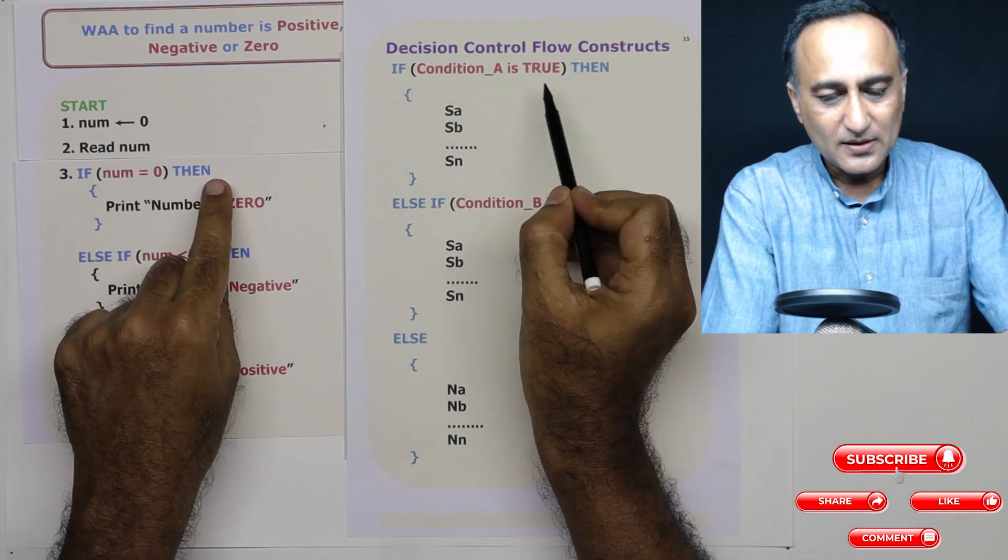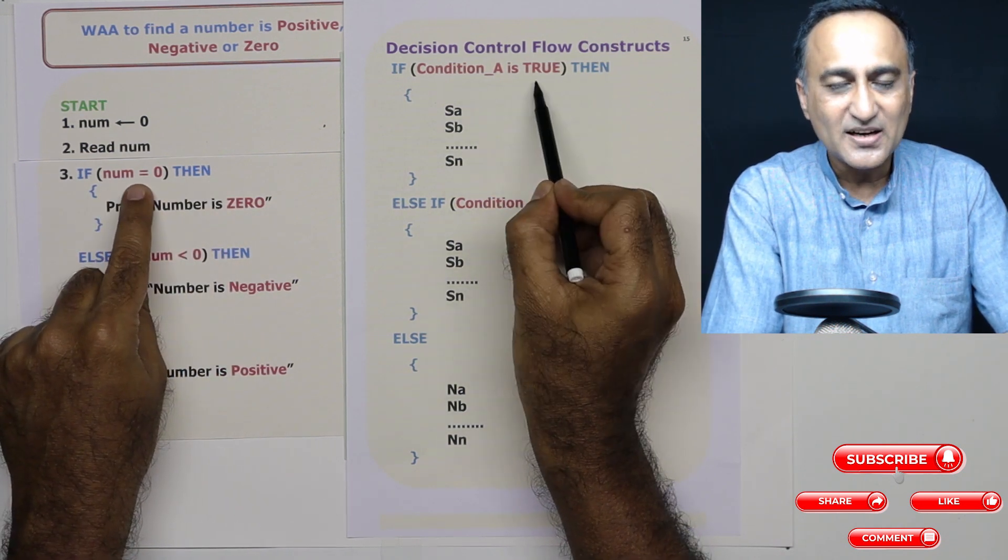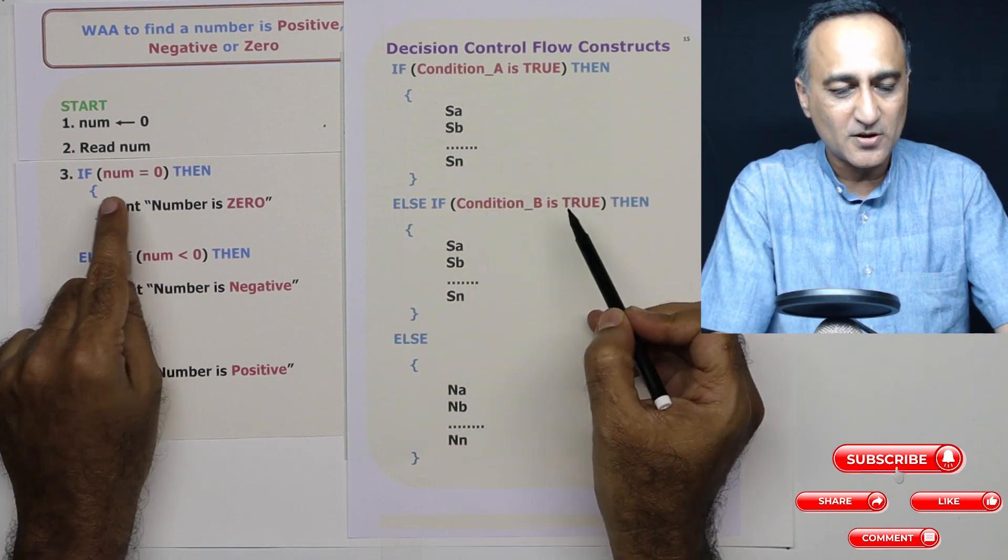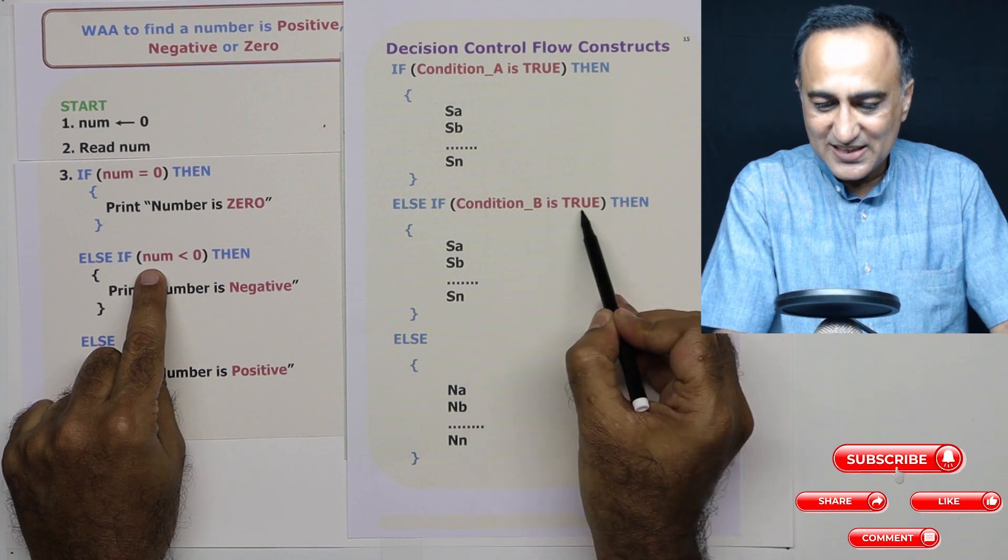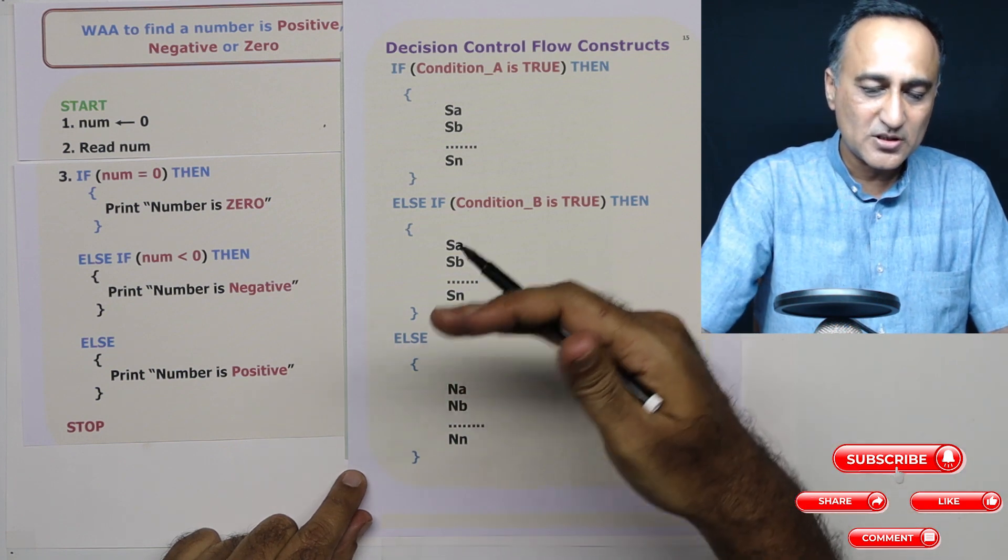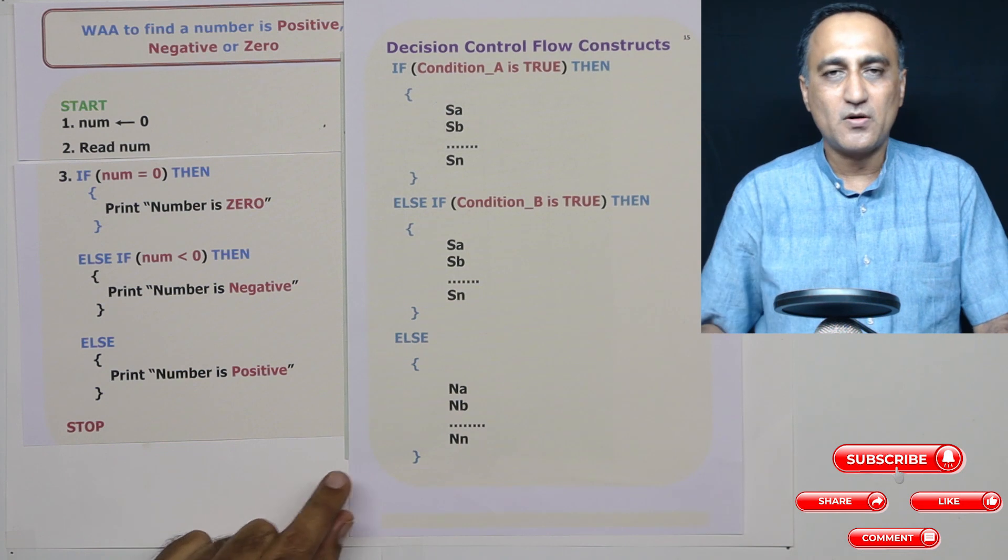So if and then, condition A is true. Number equal to zero is the condition I'm asking, the question is number equal to zero? This is the first condition. Second condition, number less than zero. So this is the second condition. Then the third one, I'm not asking condition because if this and this are false, this must be true.